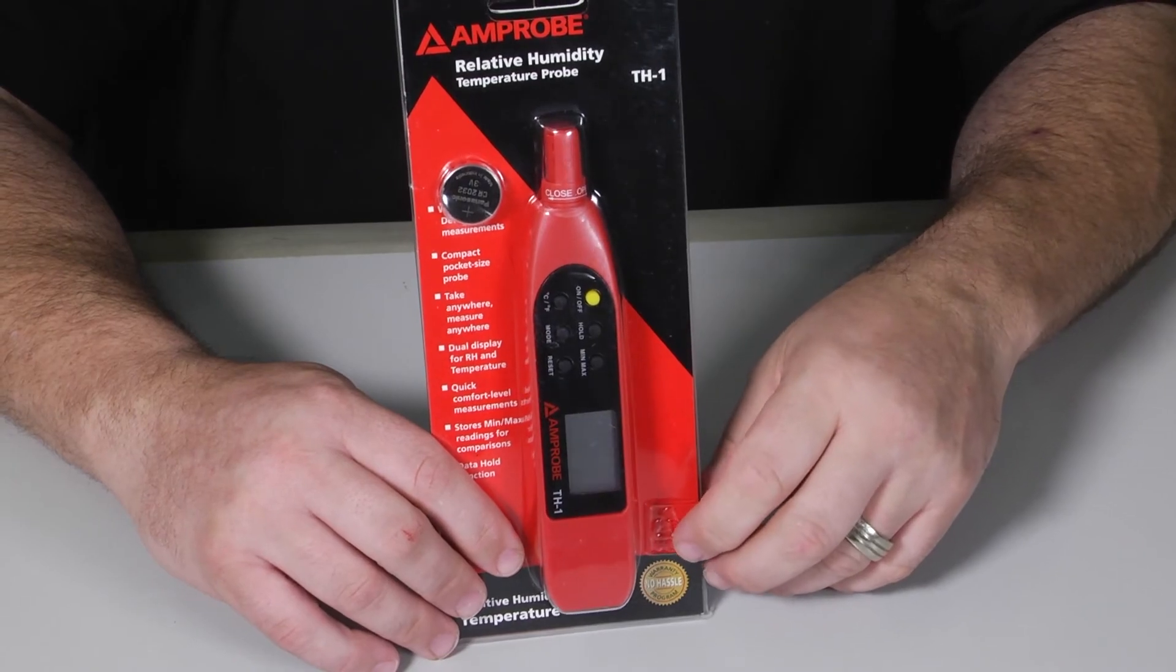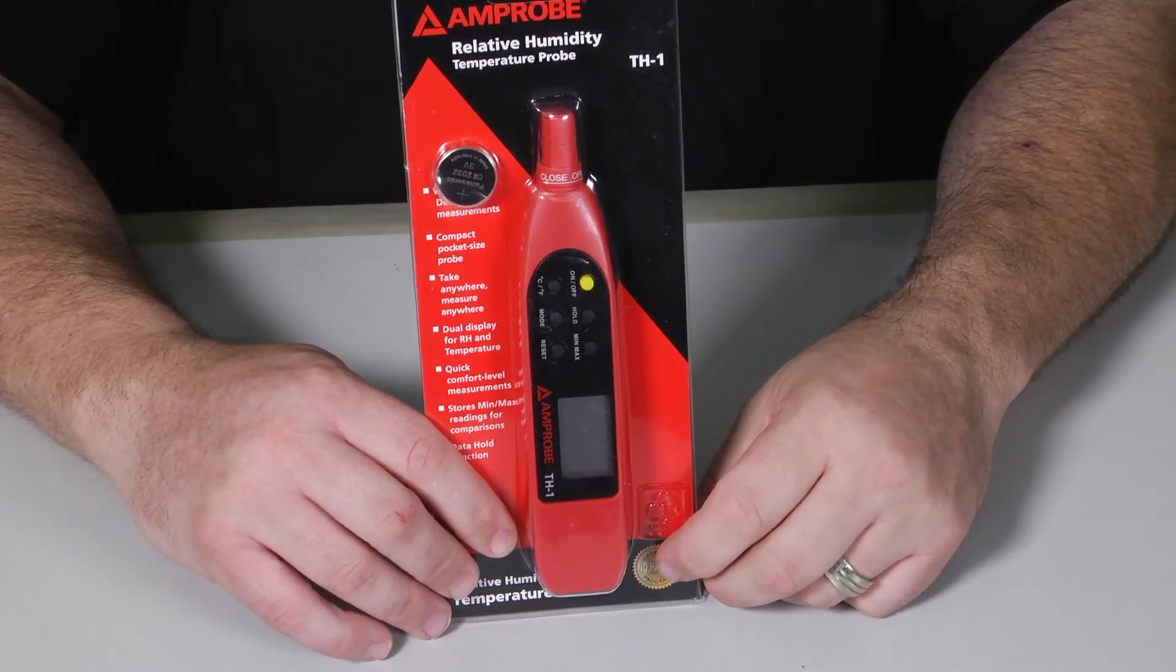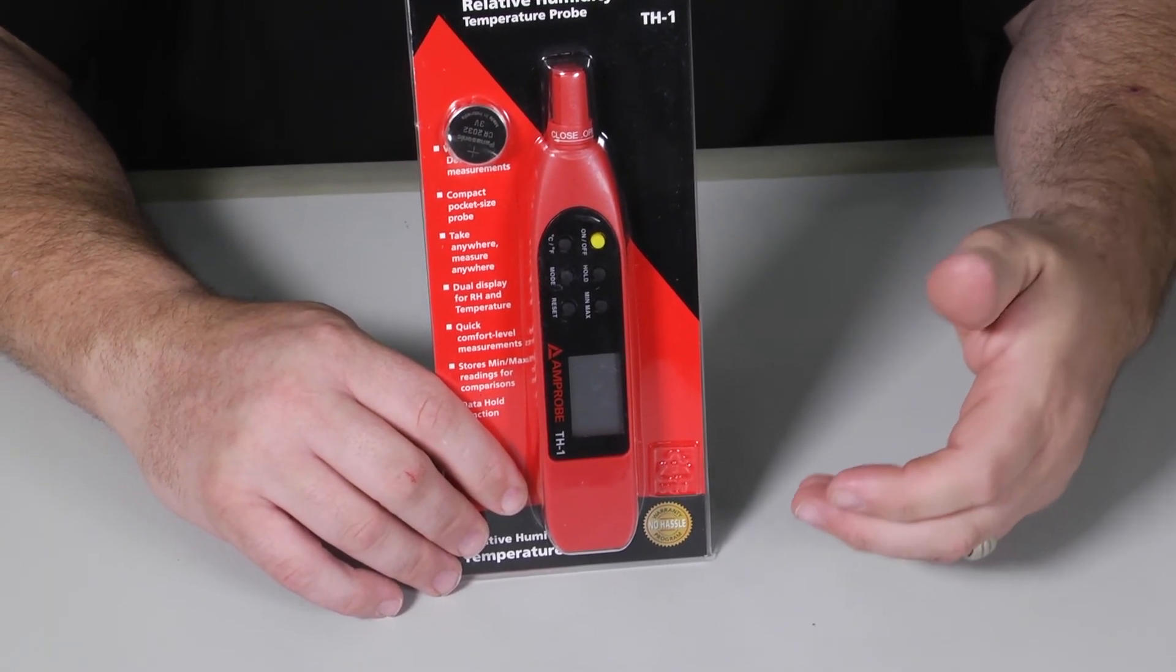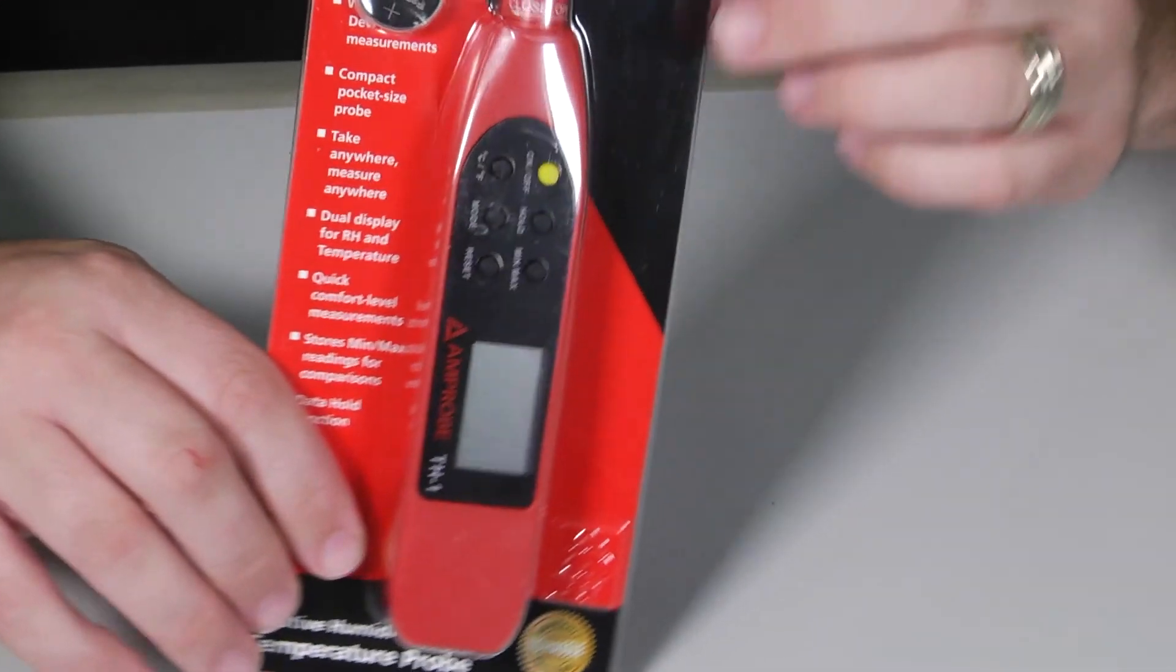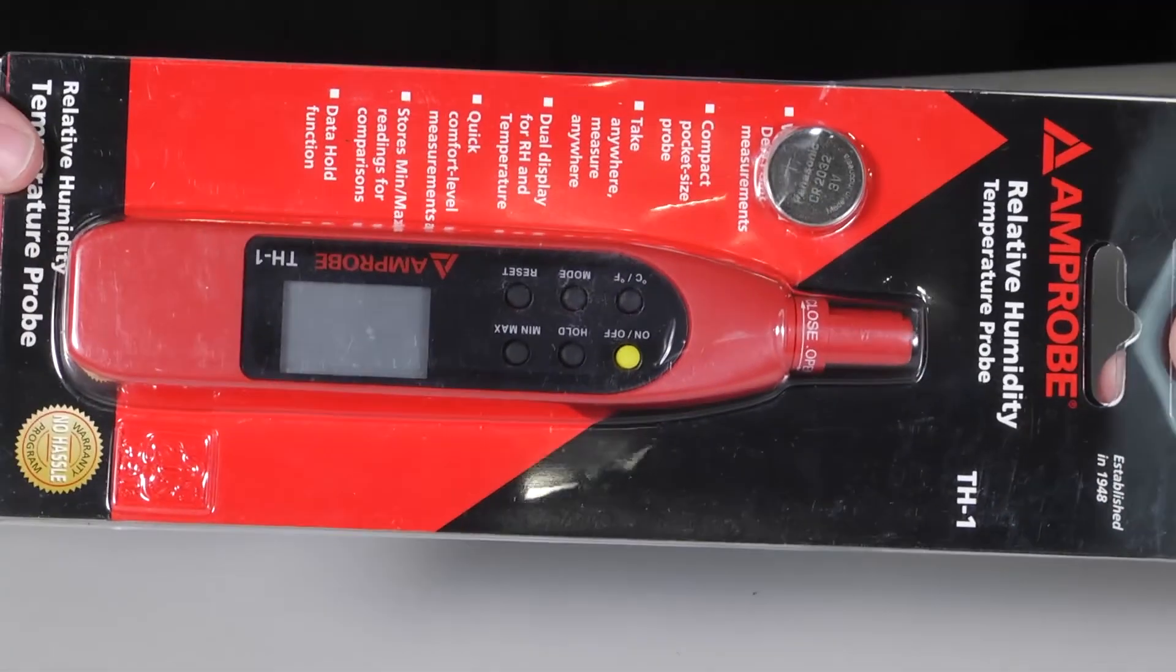So it's got a wide range of temperatures. It measures in decimal points, easy to read display, stores your mins and max. So I don't really consider this just a relative humidity probe. This is really a pocket sized psychrometer.